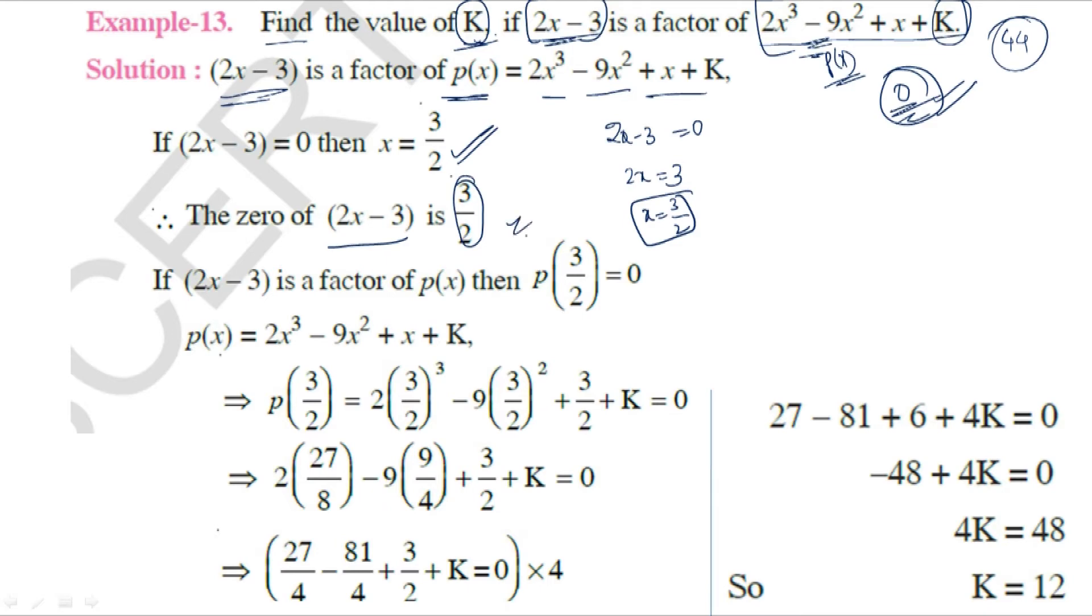By the remainder theorem, we substitute the zero into the polynomial. We already know the remainder should be 0, but we use this process to find the K value.